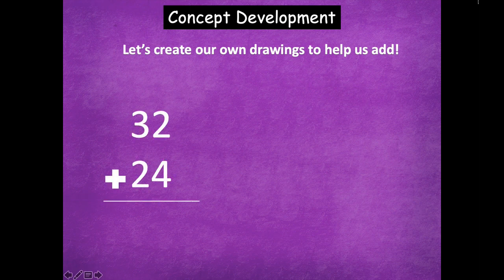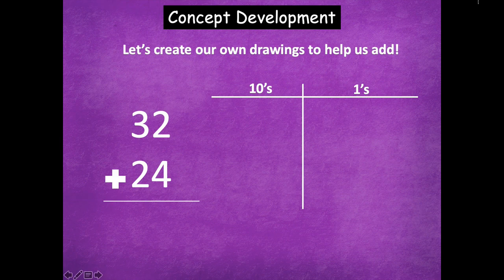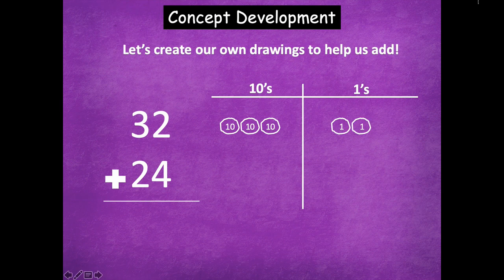Okay, so here we have 32 plus 24. Here's my place value chart with tens and ones. I'm going to model 32 with my drawings. So here's 10, 20, 30, 31, 32. So look, my drawings aren't perfect. They're a little squiggly and that's okay because it's just a drawing.